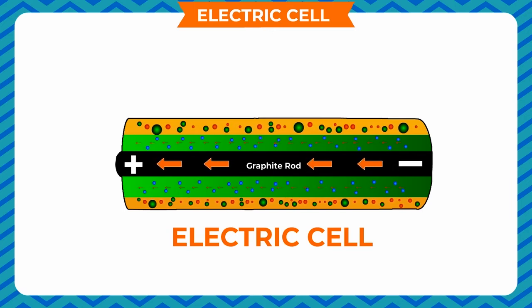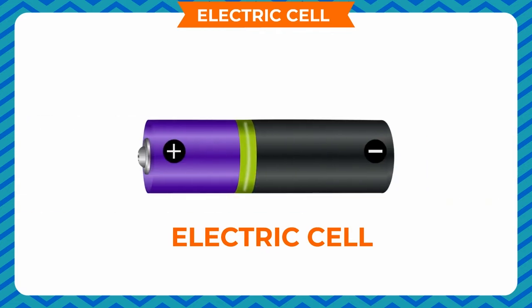When all these chemicals are used up, the electric cell stops producing electricity. In this case, the electric cell is replaced with a new electric cell.